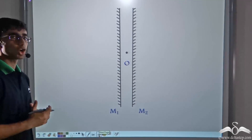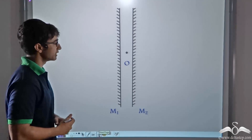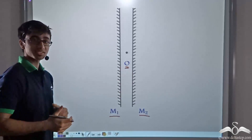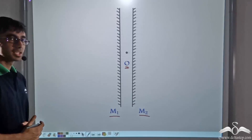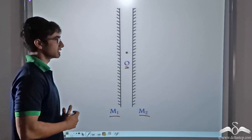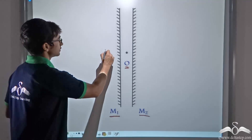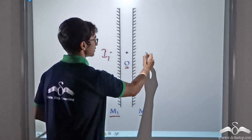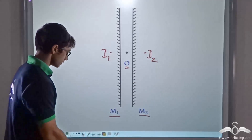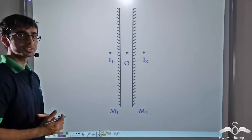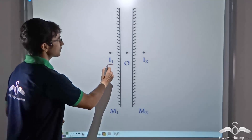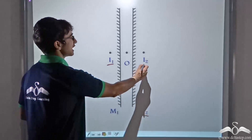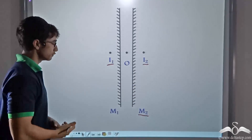Consider an object placed in between two parallel plane mirrors M1 and M2. When this object — or let's say you are standing in between these two parallel plane mirrors — your image will be obtained on both the mirrors. The image obtained on mirror M1 is I1 and the image on mirror M2 is I2. Now once these images have been obtained, what do you think happens? Image I1 acts as a virtual object for mirror M2, and image I2 acts as a virtual object for mirror M1.